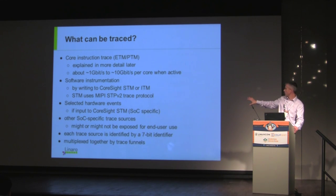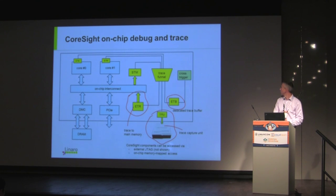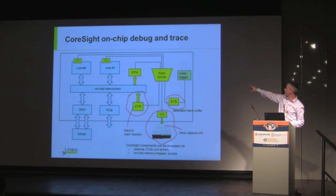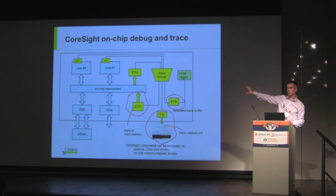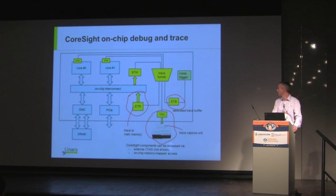The trace sources are multiplexed into the trace fabric, and they are identified by a unique 7-bit identifier attached to the trace source. Obviously, when you decode it, you have to demultiplex it at the other end.